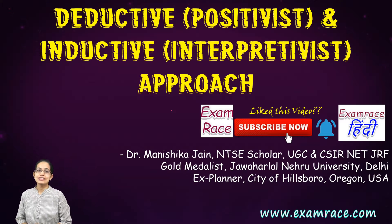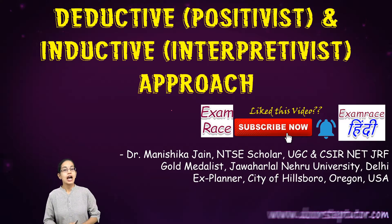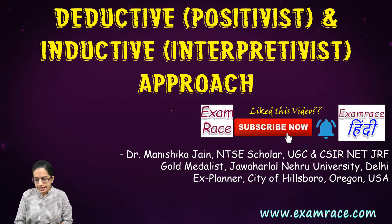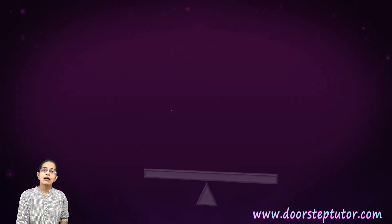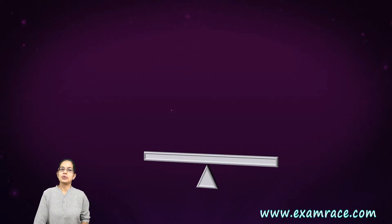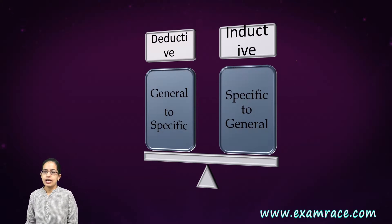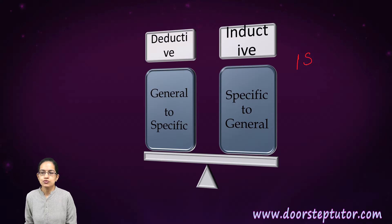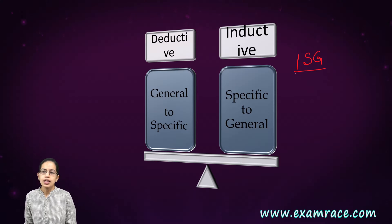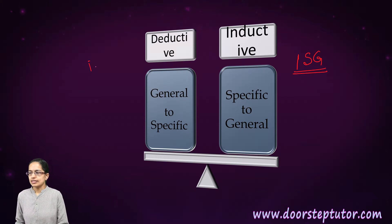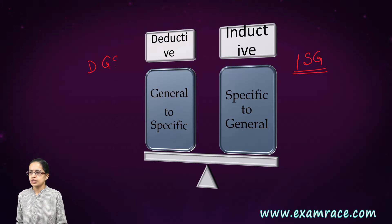When we are doing research, let's understand whether we have to follow a deductive approach or an inductive approach. We have a simple mnemonic: ISG. ISG implies the inductive approach moves from specific to general, and since inductive is specific to general, the deductive approach would be from general to specific.